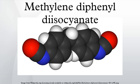Methylenedifenol diisocyanate, most often abbreviated as MDI, is an aromatic diisocyanate. It exists in three isomers: 2,2-MDI; 2,4-MDI; and 4,4-MDI. However, the 4,4-isomer is most widely used. This isomer is also known as pure MDI.